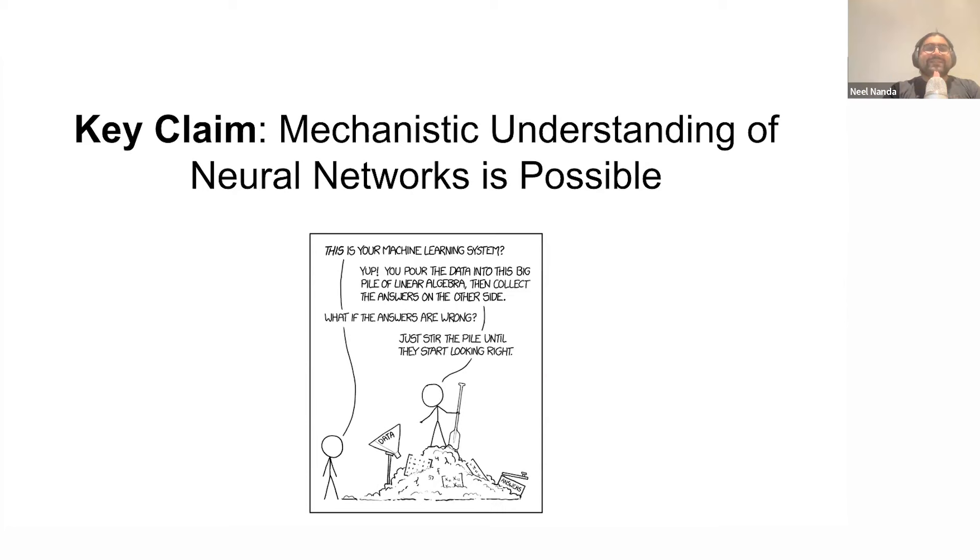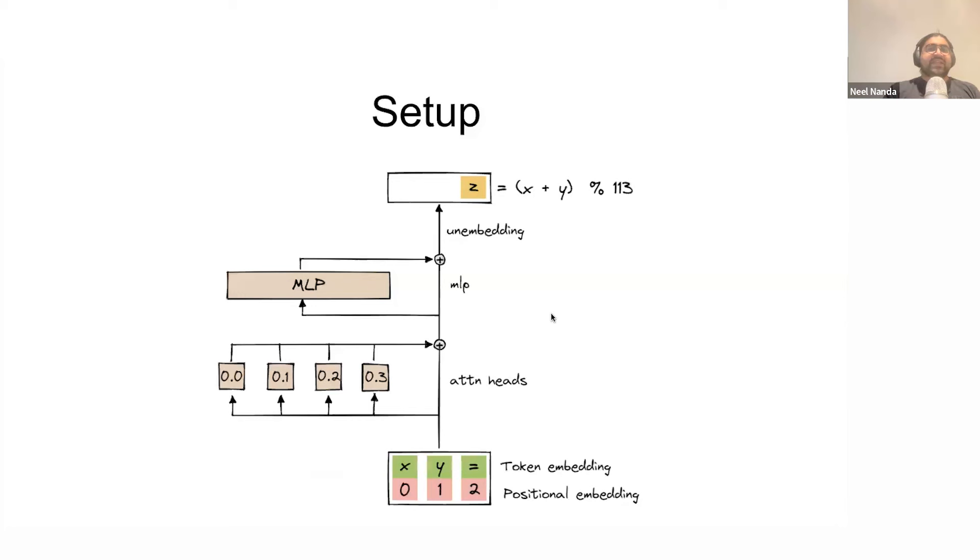So, a key claim. In my opinion, one of the most controversial claims here is that mechanistic understanding of neural networks is actually possible. Deep learning is notorious for being a bullshit science with no meaning and no structure, where you just throw a ton of data at a thing, and it works, and we have no idea why. So my claim that mechanistic understanding is actually possible seems kind of strong. And to make this argument, I'm going to go through a case study of this paper I wrote called Progress Measures for Grokking via Mechanistic Interpretability, the Modular Edition one that Jordy mentioned.